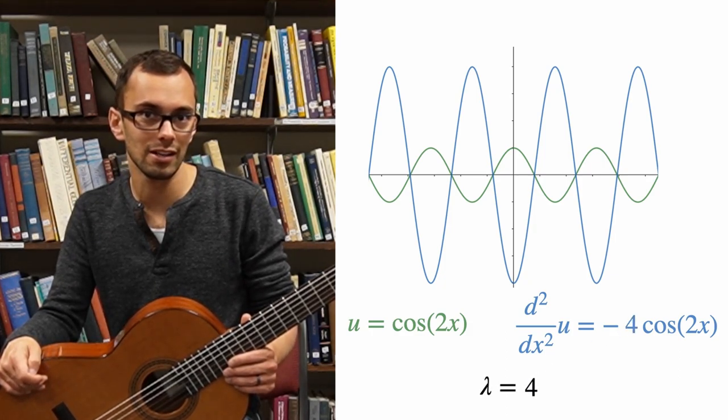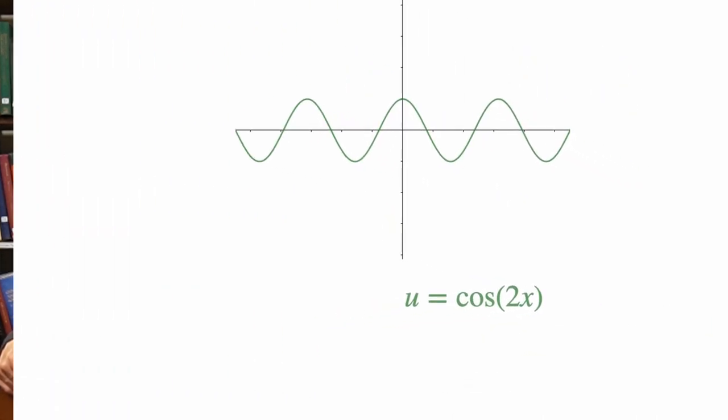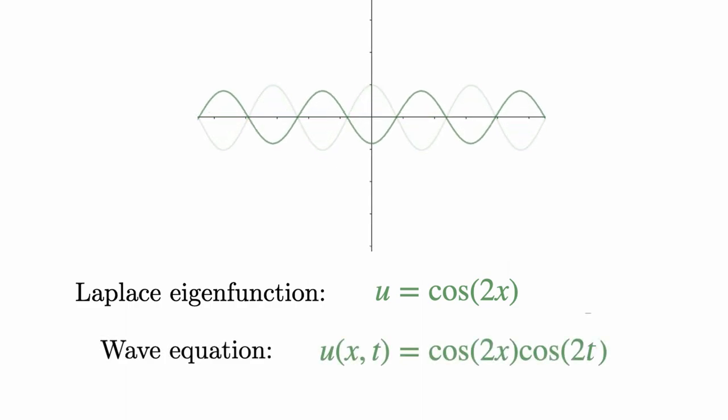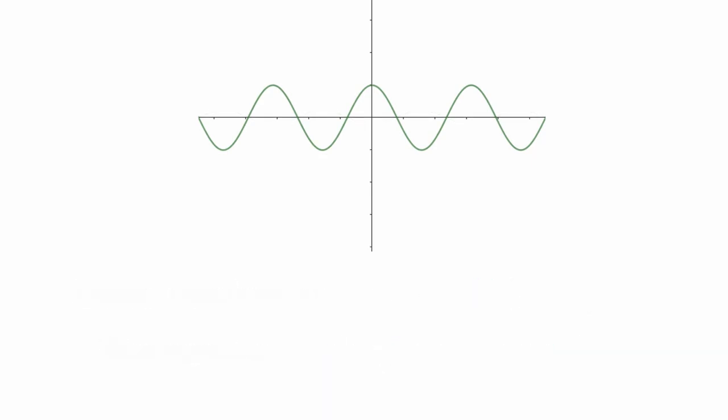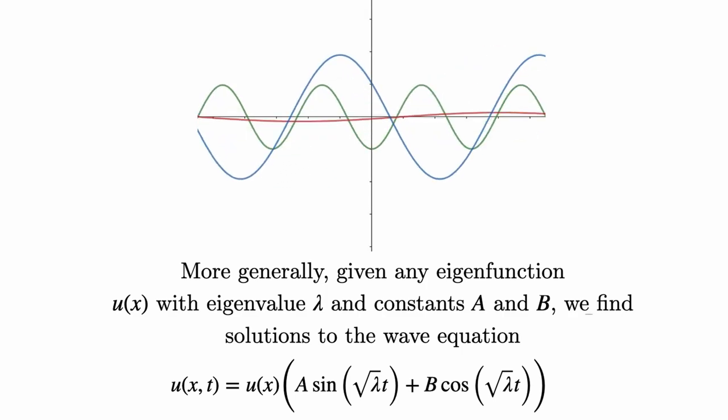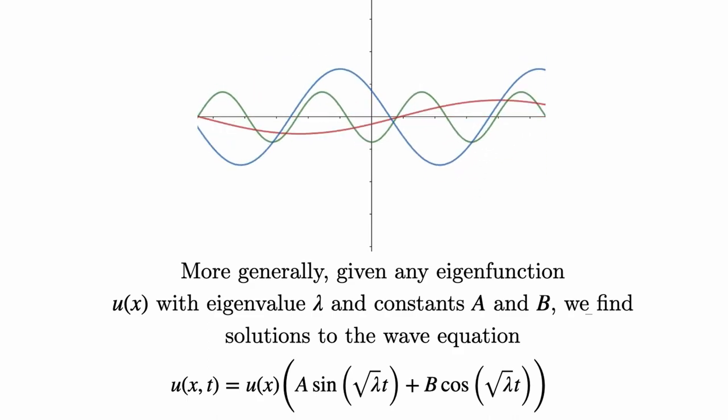For reasons that I'm not going to get into here, we put a negative sign on the right-hand side compared to the usual definition of eigenvalues for a matrix. It's just a convention, so don't let that confuse you. It turns out that given any eigenfunction, we can construct a solution to the wave equation. For those of you who have taken a course in multivariable calculus, it might be a good idea to pause this video and verify that this is actually a solution.